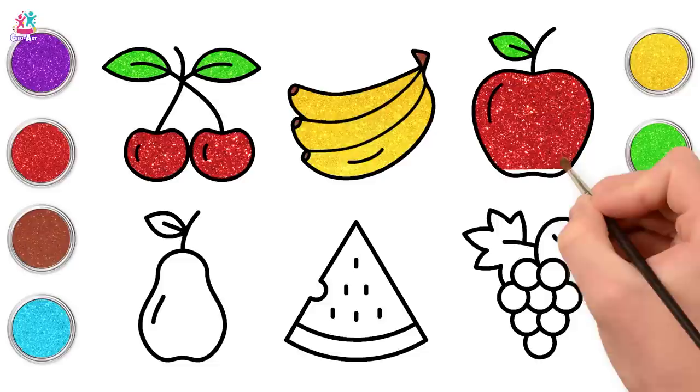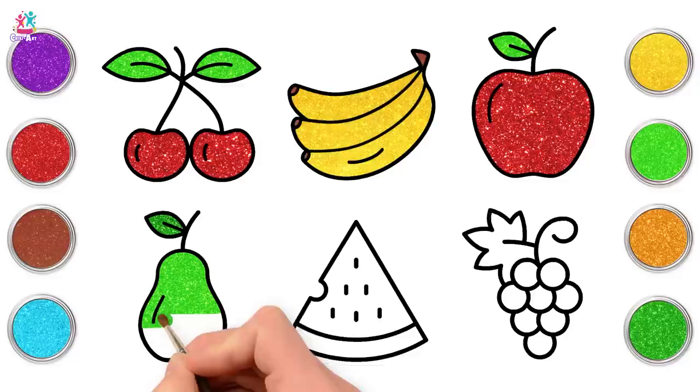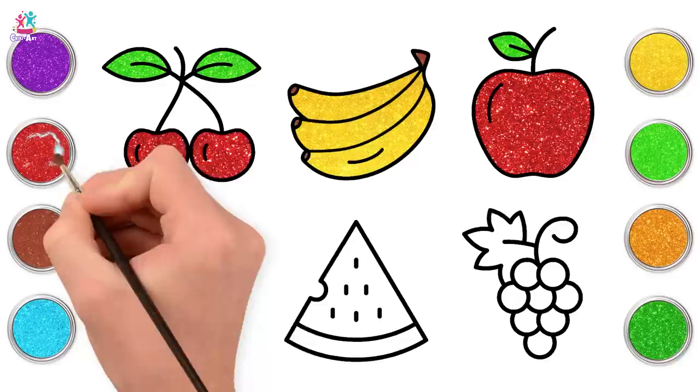Time to paint our pear leaf. And we're using a lighter green for the pear itself. Carefully painting in between the black border. And it's done. There you go.